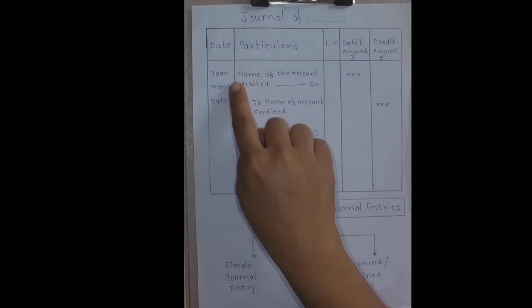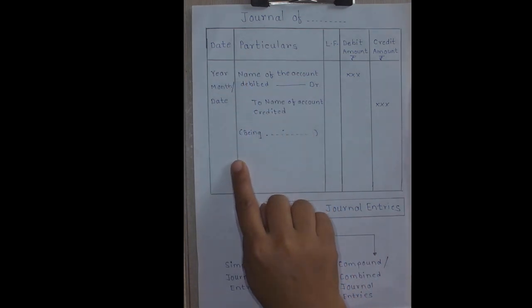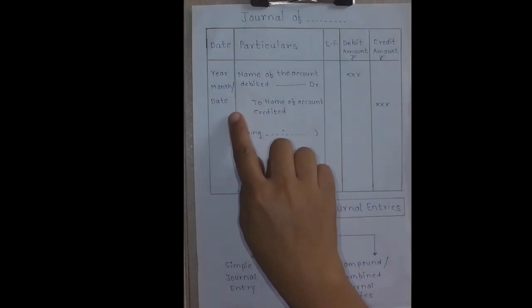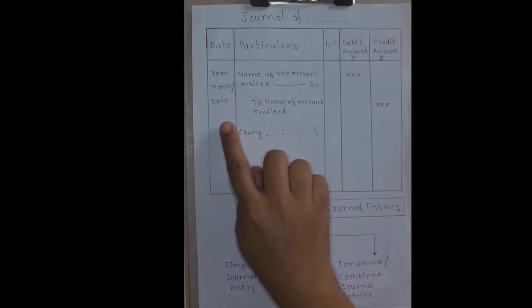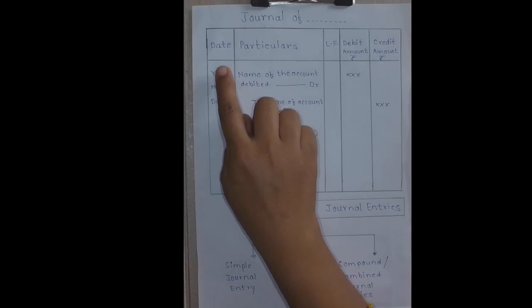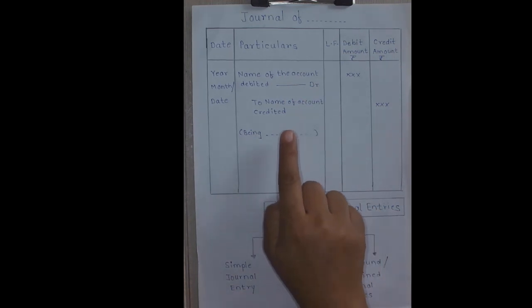The first column of journal is date. In this column, the journal records the year, month, and date of every transaction written. The year should be written at the top, and below that the month and date should be written.